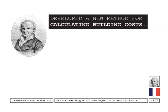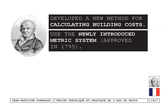Rondelet also developed a new method for calculating building costs — which can be read as part of an emphasis on function and efficiency. Quite simply, if a building costs too much, it is in excess of its very value in terms of its material and use. And he was one of the first, if not the first, to use the newly introduced metric system, which was approved in 1795 in France.